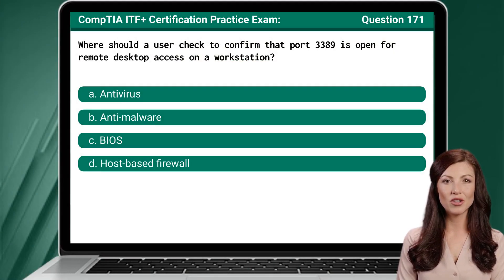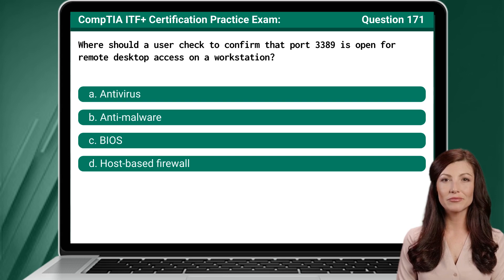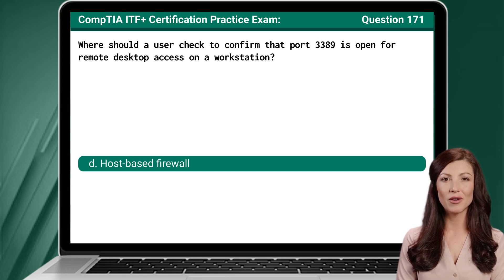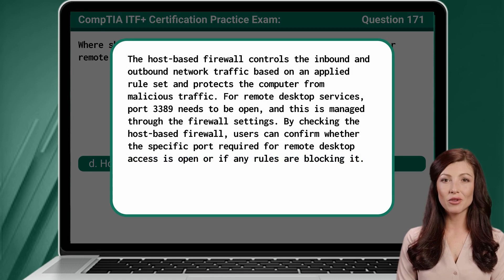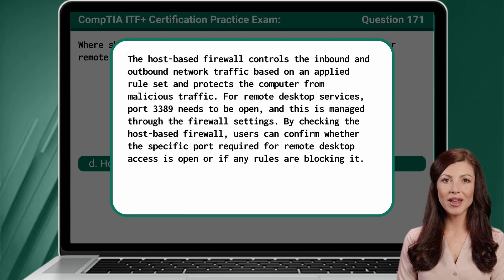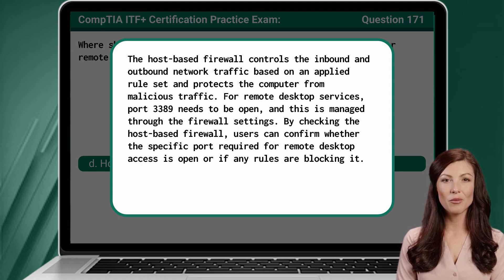Question 171: Where should a user check to confirm that port 3389 is open for remote desktop access on a workstation? The answer is D, host-based firewall. The host-based firewall controls inbound and outbound network traffic based on an applied rule set and protects the computer from malicious traffic. For remote desktop services, port 3389 needs to be open, and this is managed through the firewall settings. By checking the host-based firewall, users can confirm whether the specific port required for remote desktop access is open or if any rules are blocking it.